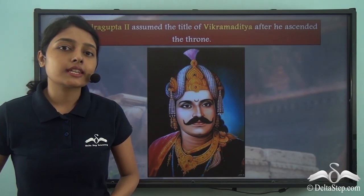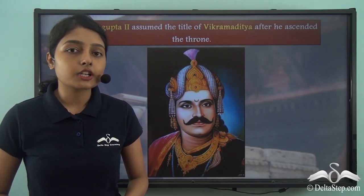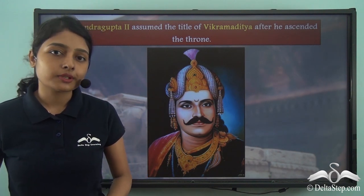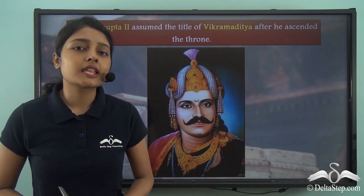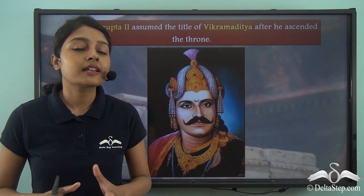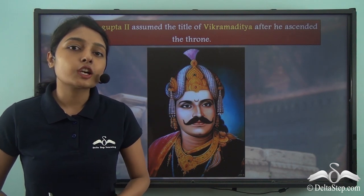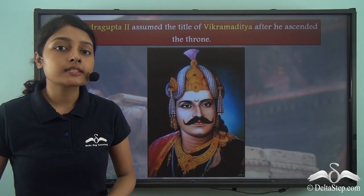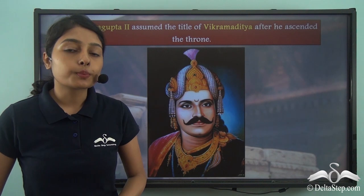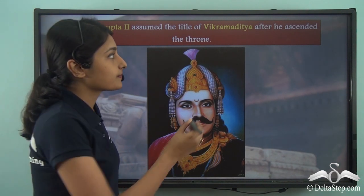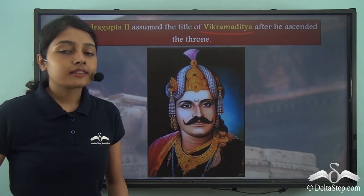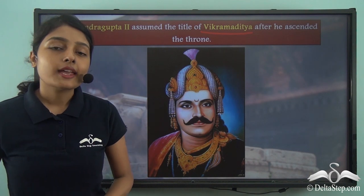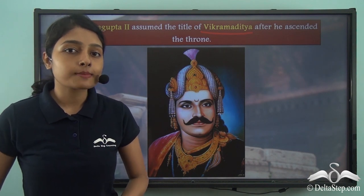In our previous lesson we learnt that after the death of Samudra Gupta, it was his son Chandragupta II who ascended the throne. Now in ancient and medieval times there was a tradition of assuming very high-sounding titles after one's coronation as the king or the ruler. Likewise, after Chandragupta II ascended the throne of the Gupta Empire, he assumed the title Vikramaditya. This was a way to establish oneself as more powerful and more prominent in the eyes of the subjects.